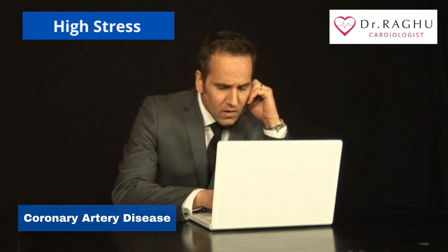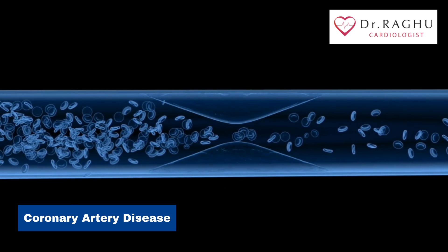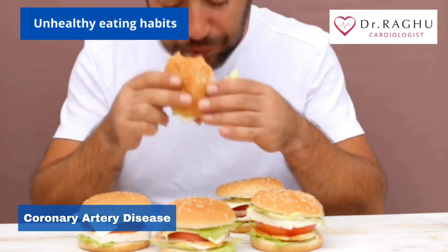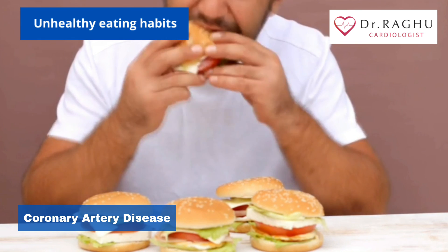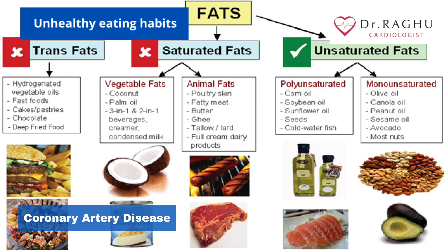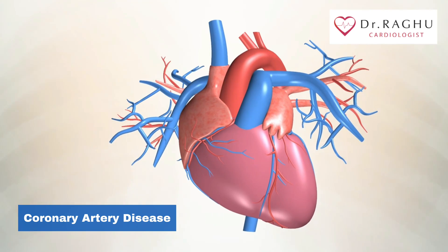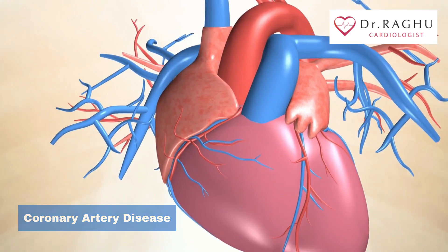Eating too much food that has high amounts of saturated fat, trans fat, salt, and sugar can increase your risk of coronary artery disease. Risk factors often occur together, and one may trigger another.